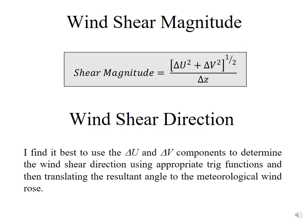For wind direction shear, it's best to use the delta U and delta V components, because once you have those, you can use trigonometry to find the resulting angle and then convert that to meteorological wind direction. We'll do a whole bunch of examples of that in class. The wind shear magnitude equation is useful, but thinking through the shear direction using delta U and delta V components each time is recommended.